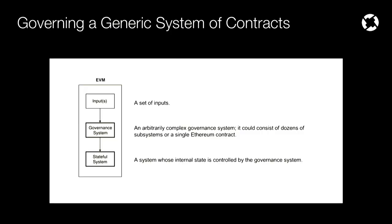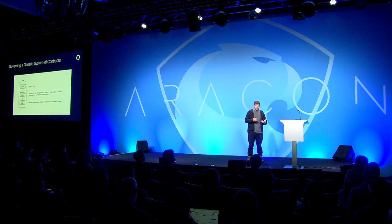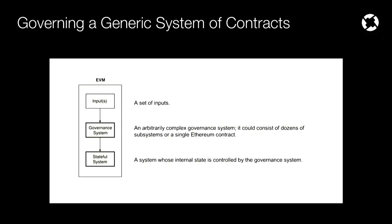How can we think about a governance system in the highest level, most generic way? We have a set of inputs that are fed into some arbitrary governance system. The inputs could be votes associated with on-chain identities, token votes, reputation — they could be anything. And the governance system could also be very complex and nuanced. We're going to represent it as just an arbitrary black box. And then the governance system is controlling some sort of stateful system of smart contracts on the Ethereum blockchain.